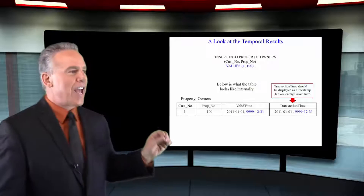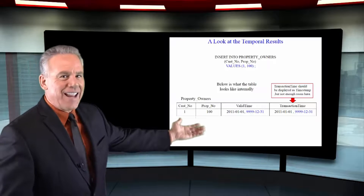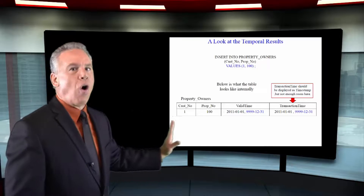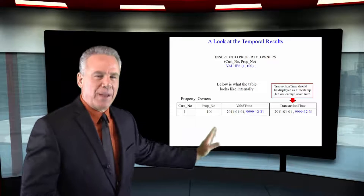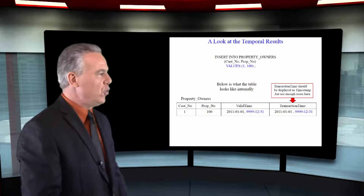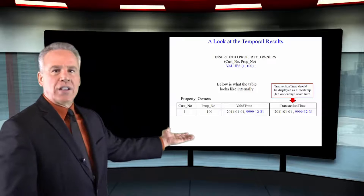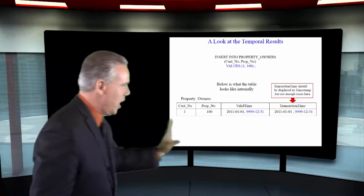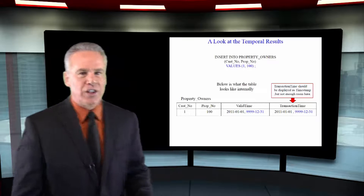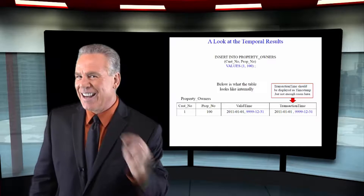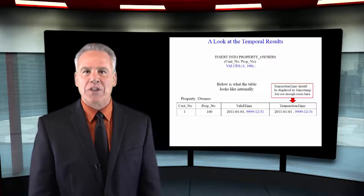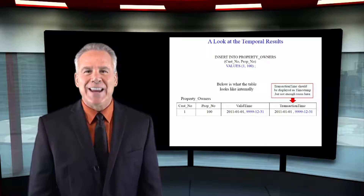Now look at the transaction time. I've just put the dates in here, but realize it would actually always be a timestamp — I just didn't have enough room for that. As you can see, it shows that Tom bought this on January 1st and it's still open because it says 9999-12-31, and that's how the row looks inside the table.